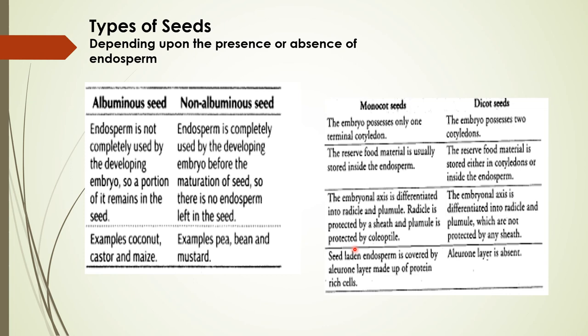In this video we discussed post-fertilization events — the formation and development of endosperm, the formation and development of the embryo, the stages of embryo development, and the differences between dicot and monocot embryo. We also discussed seed formation. In the coming video, we will study how fruit formation takes place. Please go through this video thoroughly, and if you have any problem you can reach out and we can discuss. Thank you.